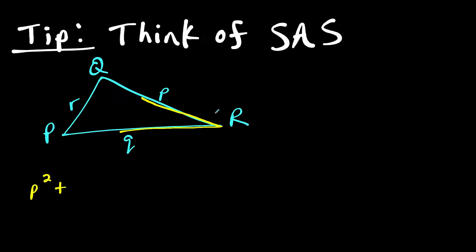Then if I was using the law of cosines for this particular triangle, I would have P squared plus Q squared minus 2PQ times cosine of angle R equals side R squared.